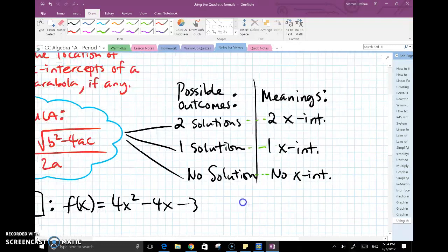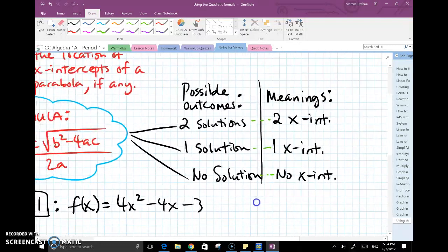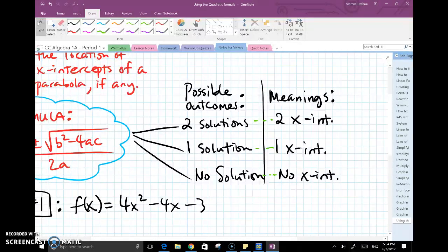As I said earlier there are three possible outcomes. Using this formula you will get either two solutions, which means two x-intercepts, one solution which means one x-intercept, or no solutions at all, meaning no x-intercepts when graphing this parabola.